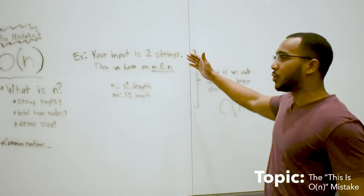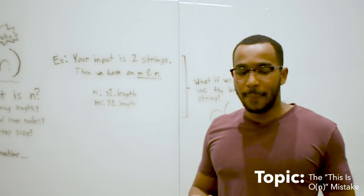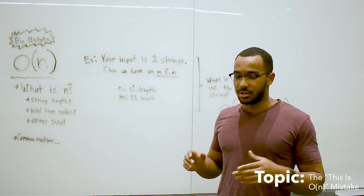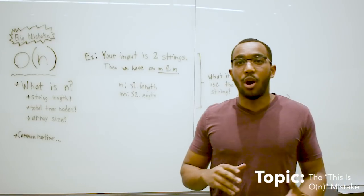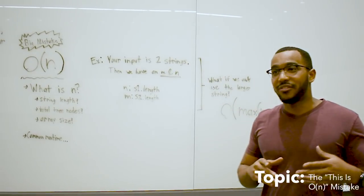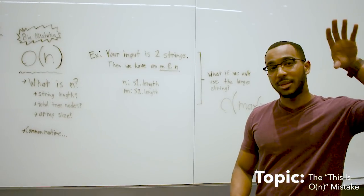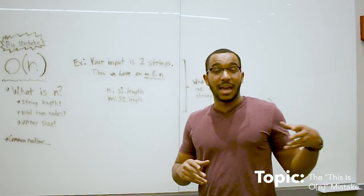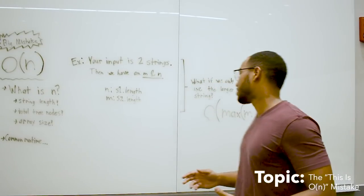Let's take an example. If you have two strings of input, our runtime is not O of n. This is a very common mistake. It would be O of m, and then you have to factor in n. So n would be the first string's length, and m would be the second string's length. It might be m plus n, it might be m times n, depends what the problem is.